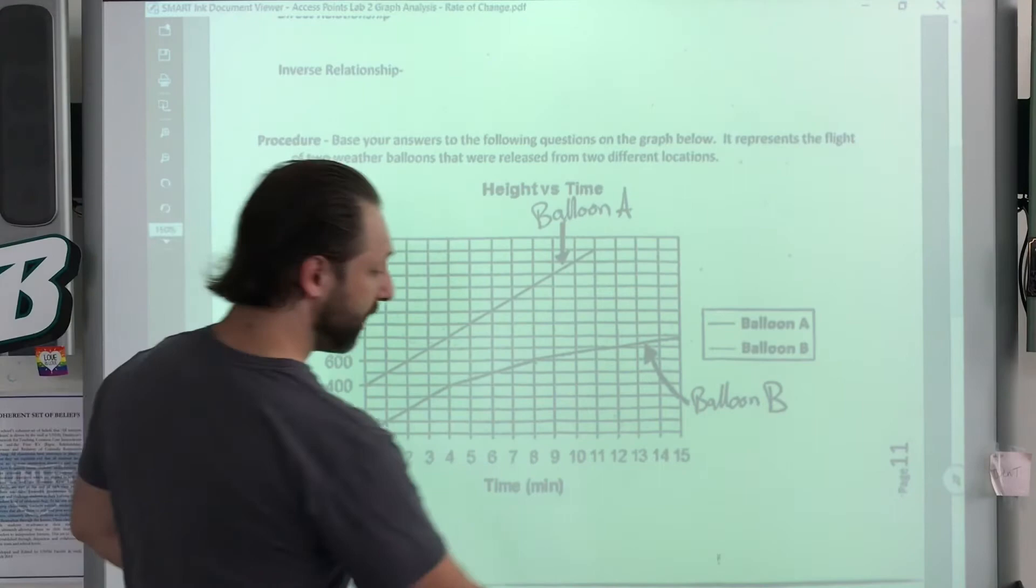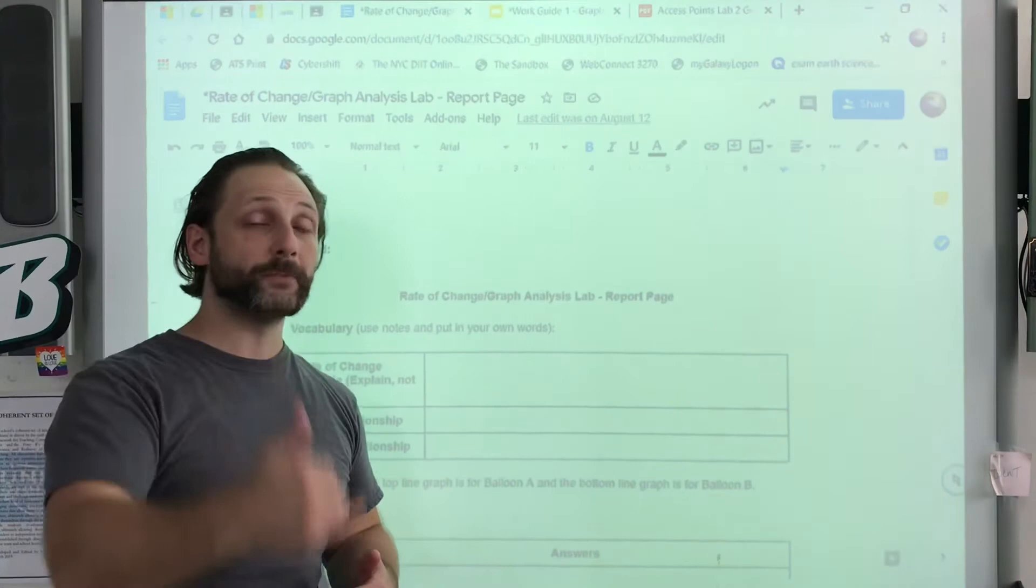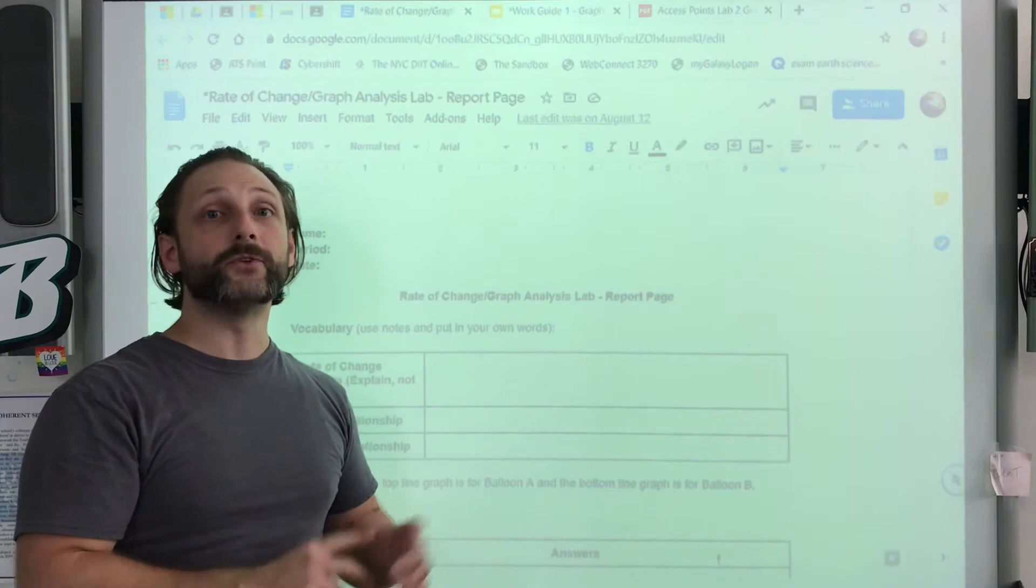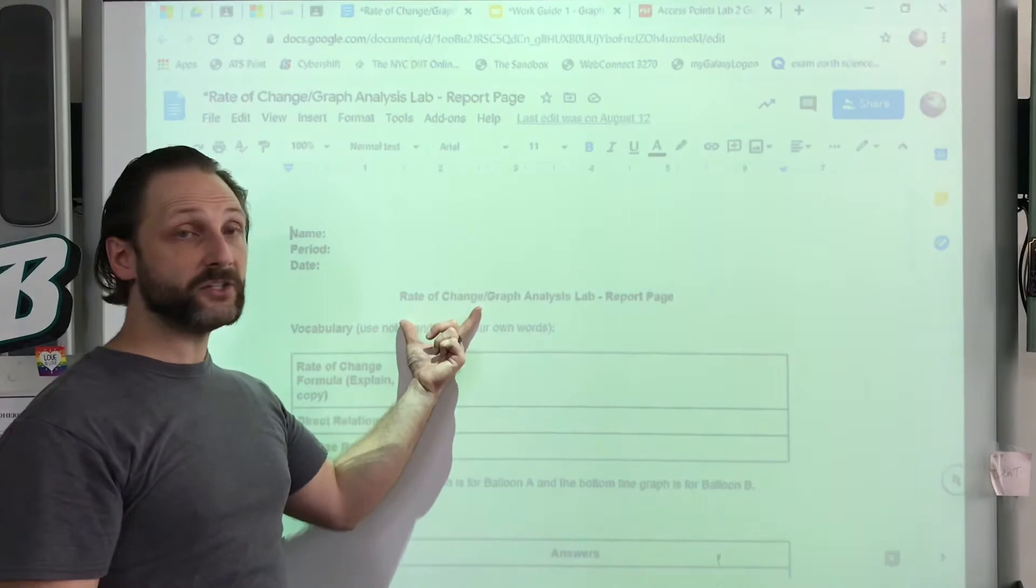The place for you to do your recording is going to be here. Depending on what class period you are, make sure you click the right link that will take you to the assignment page for you to then choose the assignment you're working on, which is this lab report. Rate of change, the lab's actual name is Graph Analysis Lab, and it's your report page.